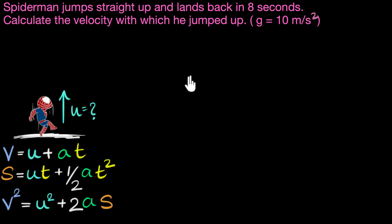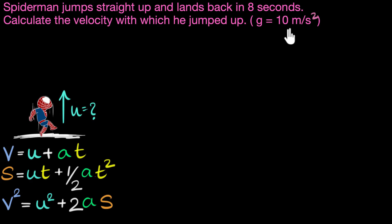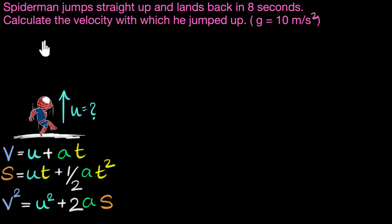The problem is that when Spider-Man is going up, he's slowing down, and during that time his acceleration is negative because he's becoming slower and slower. On the other hand, when Spider-Man is coming back down, his velocity increases — he becomes faster and faster — and the acceleration becomes positive. So we cannot consider the total motion because the acceleration has different signs during each part.